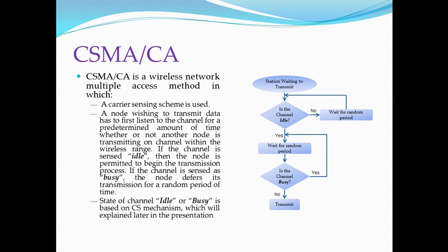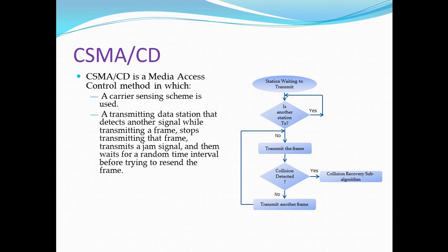Contention is nothing but waiting for a random amount of time, which is chosen by the device. When its contention timer expires, if the channel is still idle, the node sends the packet. The node having chosen the shortest contention delay wins and transmits its packet. The other nodes wait for the next contention. Because the contention is a random number done for every packet, each node is given an equal chance to access the channel.